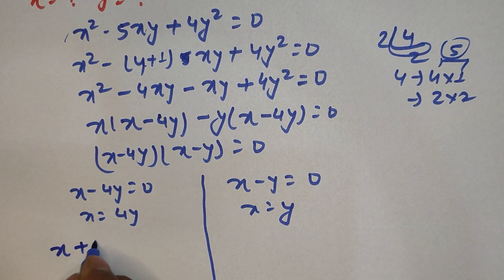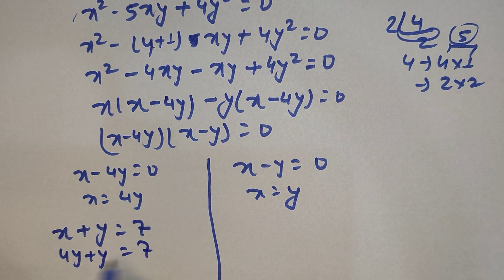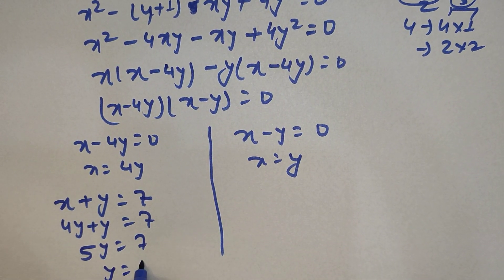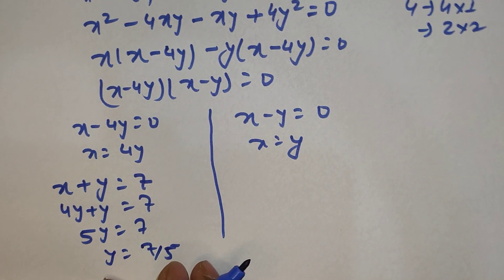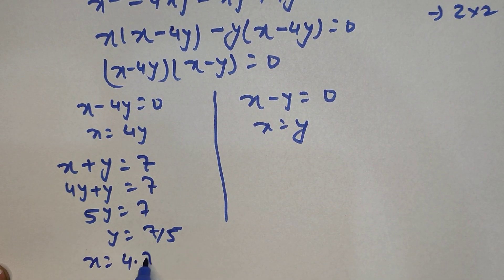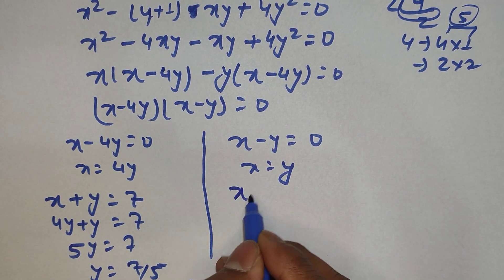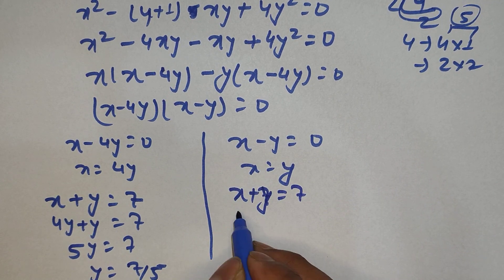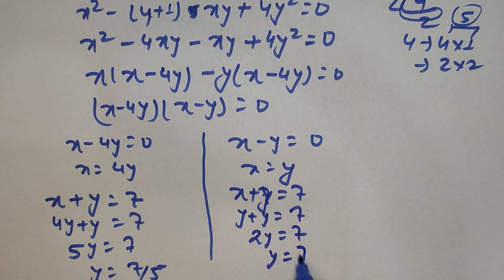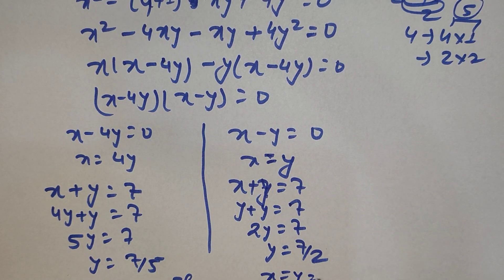Our second equation is x plus y equals 7. Substituting x equals 4y gives 4y plus y equals 7, so 5y equals 7, meaning y equals 7/5, and since x equals 4y, x equals 28/5. For the second case, substituting x equals y gives y plus y equals 7, so 2y equals 7, and y equals 7/2.